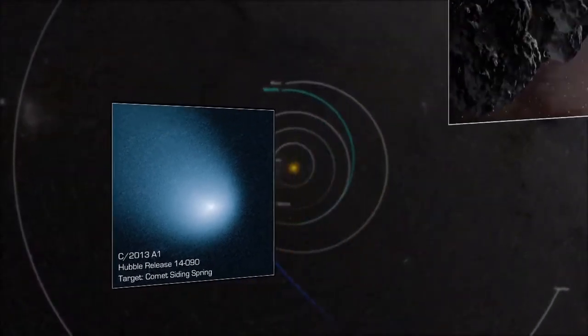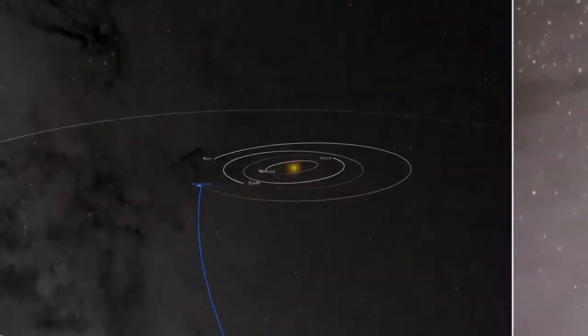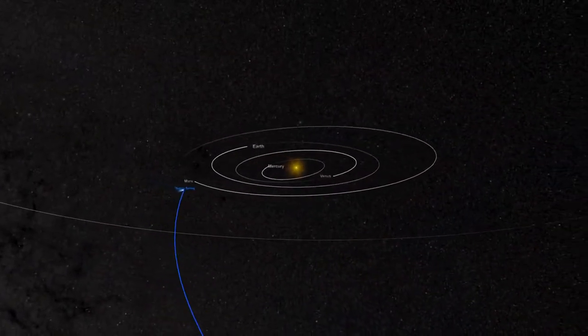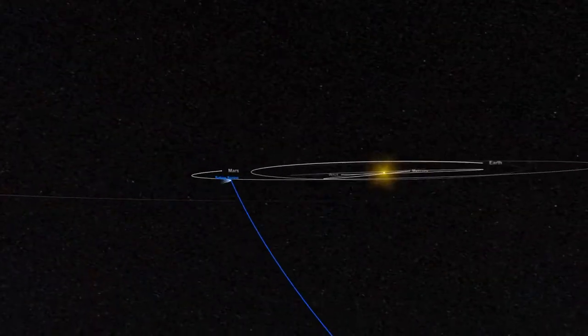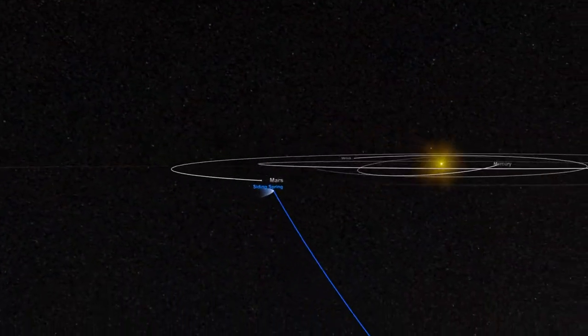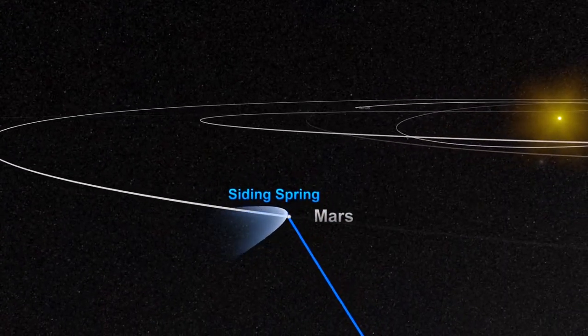This chunk of frozen water and gas, with the estimated mass of a small mountain, left the Oort Cloud's southern hemisphere millions of years ago. It was discovered by astronomers at Australia's Siding Spring Observatory in 2013 and is now approaching the plane of the solar system, set to make a remarkably close encounter with Mars.